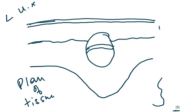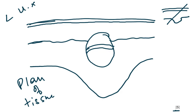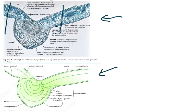Use nearly three-quarters of the available space. Don't draw a tiny diagram — you would lose a mark. This example from the textbook is a good plan drawing. You can see lines for the upper epidermis and lower epidermis.